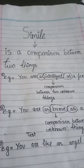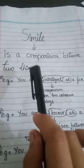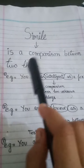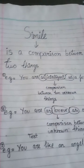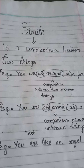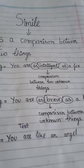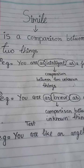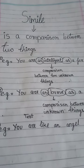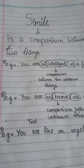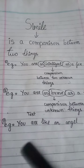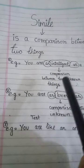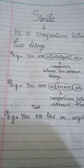So, simile is a comparison between two things. Basically, simile is a comparison between two things — the word we use for that comparison is called simile. I'll explain with examples; I have three examples here.